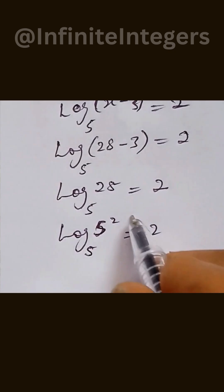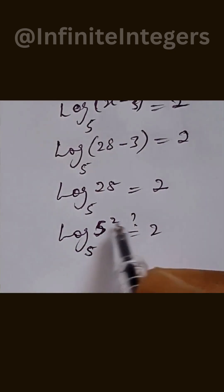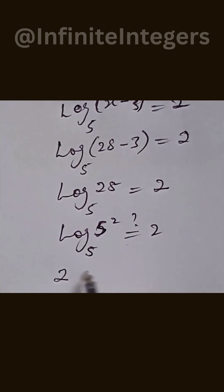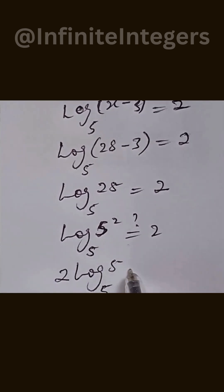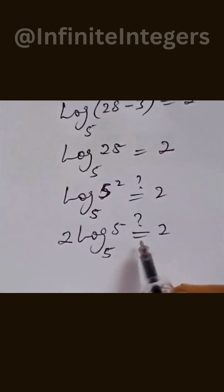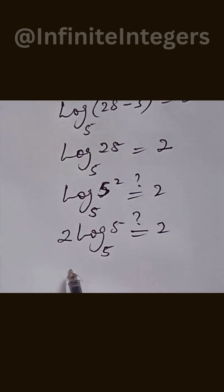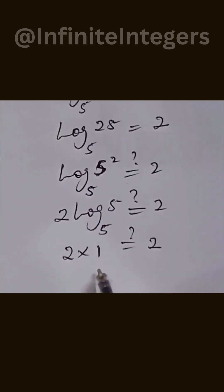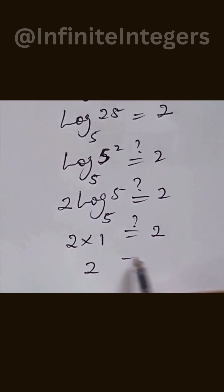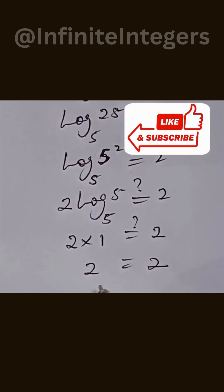We can bring the 2 down, giving us 2 times log base 5 of 5. Since log base 5 of 5 equals 1, we have 2 times 1, which equals 2. The left hand side equals the right hand side. Thanks for watching — subscribe, like, and share the video with your loved ones. Bye for now.